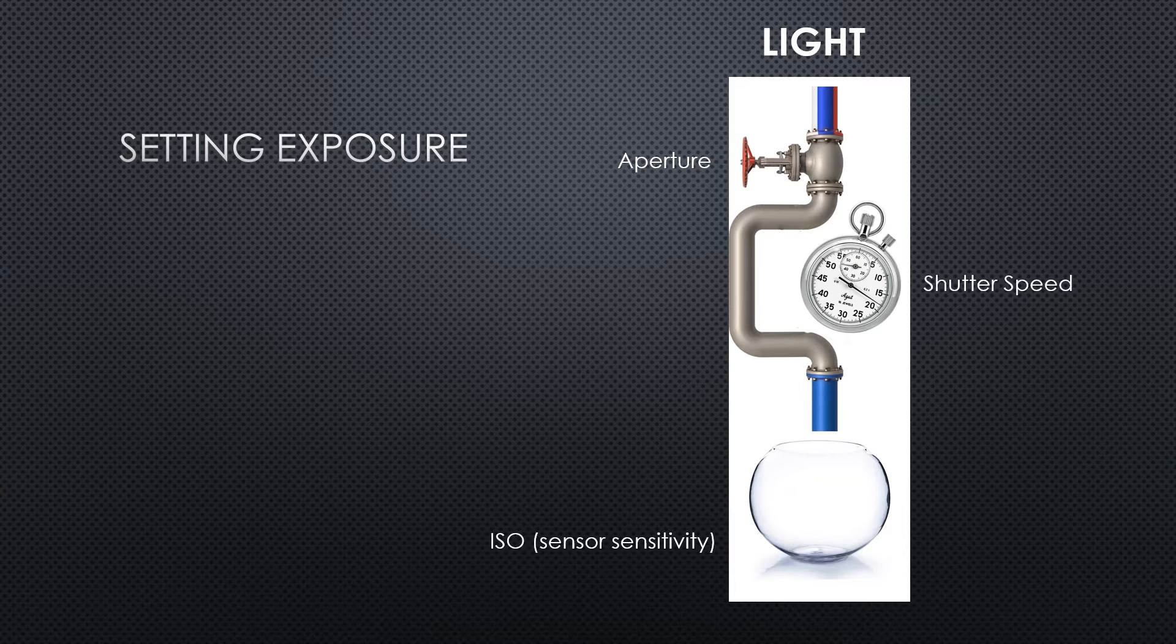If we look at the diagram and compare it to the way that our cameras work, the pipeline would represent the barrel of the lens. The width of the opening determines how quickly water or light can pass through. The stopwatch represents the shutter speed or the amount of time that we allow the lens to be open. Leaving the valve open for a longer time allows more water to pass through, just as leaving the sensor open will allow more light to pass through.